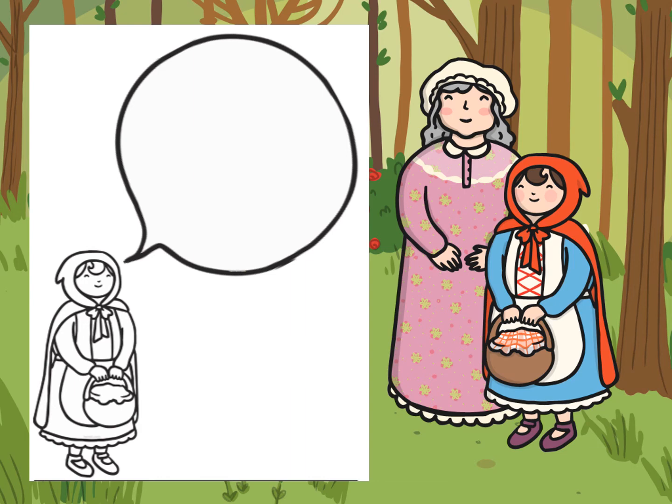I think she might say, "Oh Granny, what big eyes you have." And so if I think that's what she says, I can write it in that speech bubble. You could come up with any sentence you think your character would say, and then you're going to write it in the speech bubble. I've made it a little bit easier for you because I've drawn the lines in for you, so it's easier to do your really nice neat writing — making sure you've got your capital letters, your finger spaces, and your full stop at the end, or maybe a question mark if it's a question.